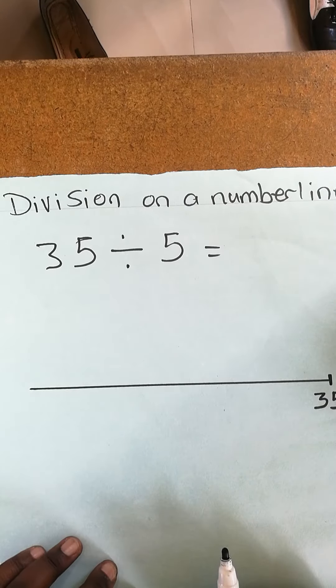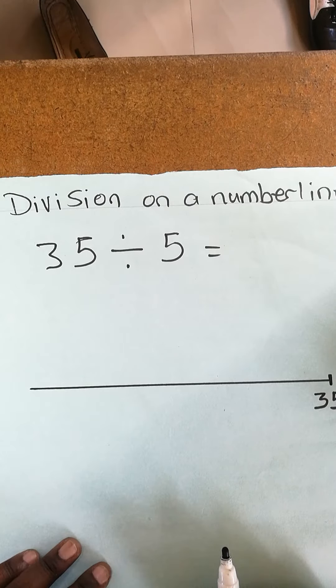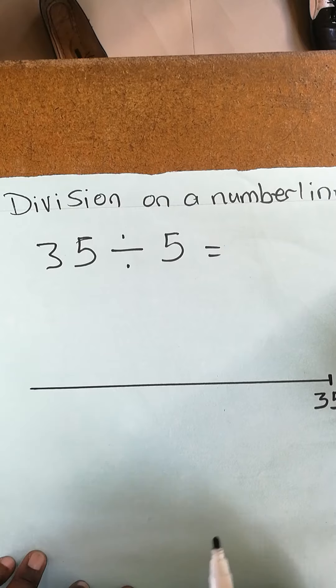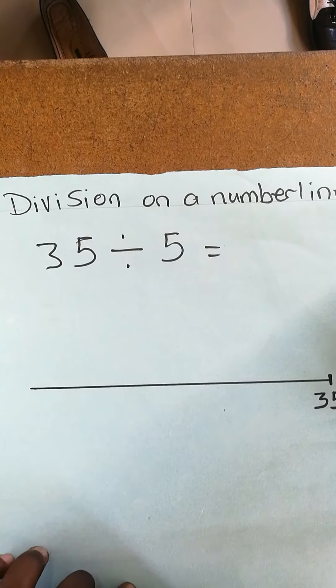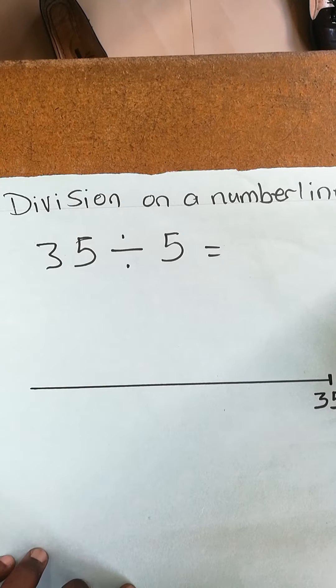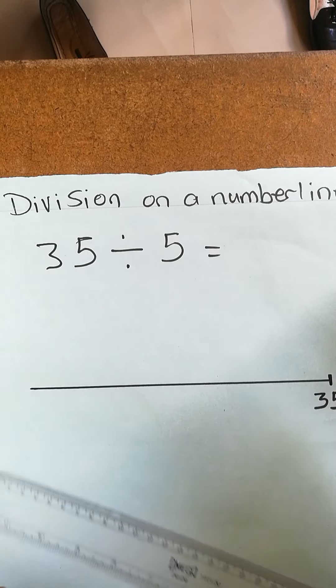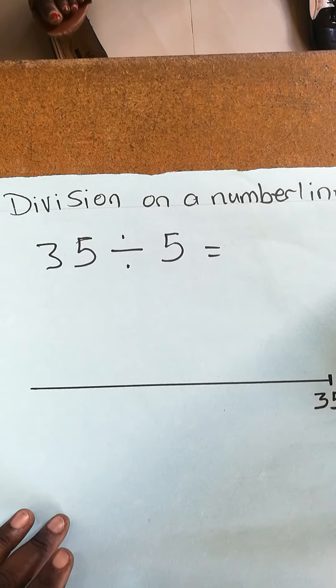Welcome to week 5. Today we are doing division on a number line. 35 divided by 5. What is the first step? The first step is to draw a line straight using your ruler. I've already drawn my line. Next...